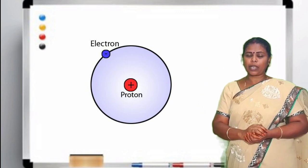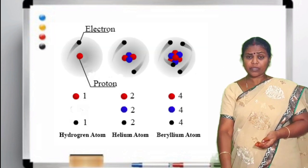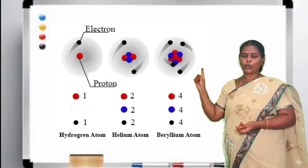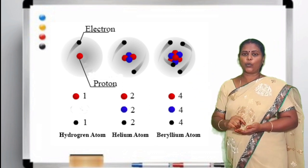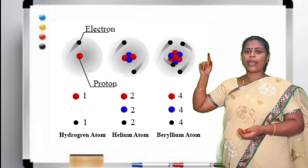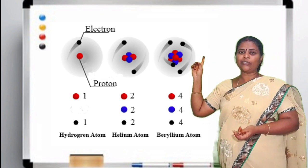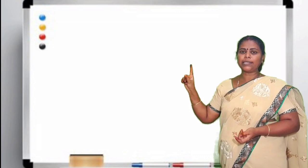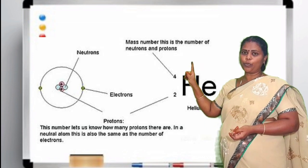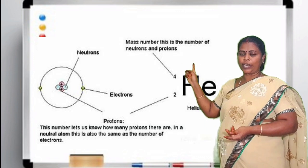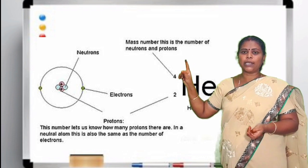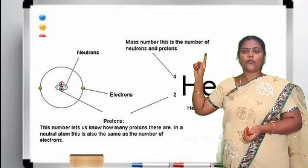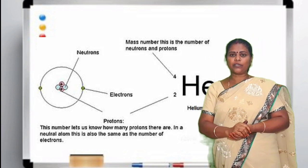Next, when you take helium — helium has 2 protons and 2 neutrons in the nucleus, and it has 2 electrons revolving in the spherical orbit. So the atomic number of helium is 2 because it has 2 protons or 2 electrons. And the mass number is proton plus neutron, which is 2 plus 2, so it is 4.